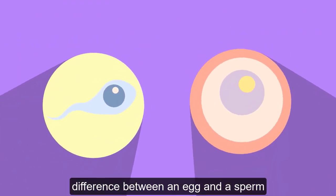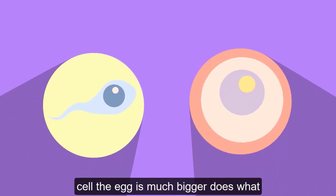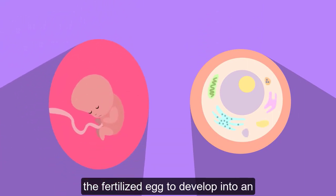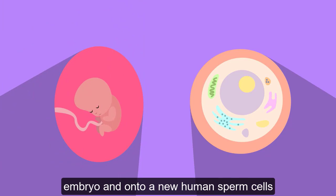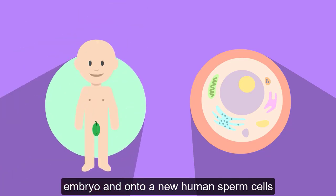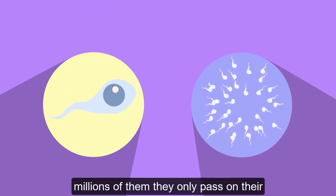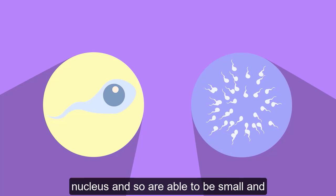From this video, you should now know the difference between an egg and a sperm cell. The egg is much bigger, does not move, and contains organelles needed for the fertilized egg to develop into an embryo and onto a new human. Sperm cells are much smaller and motile, and there are millions of them. They only pass on their nucleus and so are able to be small.